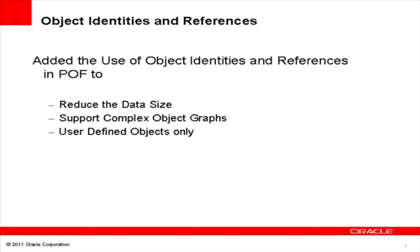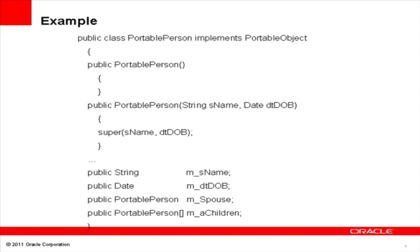Only user-defined object types can use object references. Let's take a look at an example to see how this object can benefit from object references. In this PortablePerson object, we have a spouse member, which is a PortablePerson, and a children member, which is an array of PortablePersons.